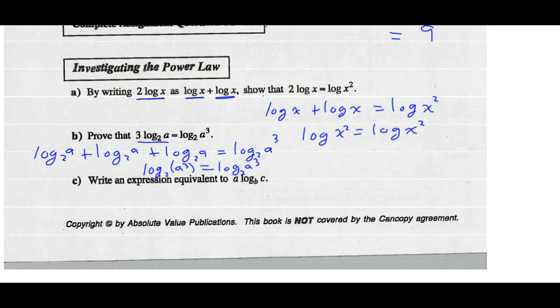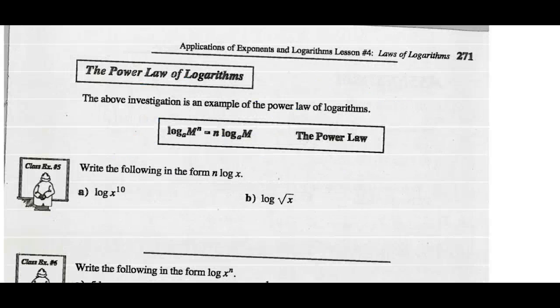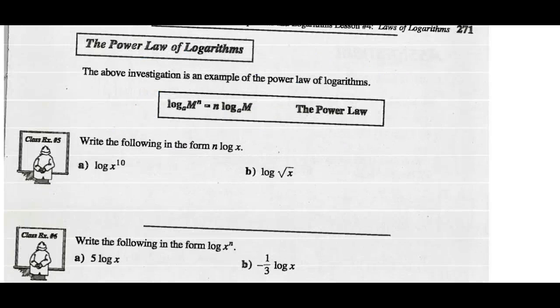So write an equivalent expression: A times log C base B is the same as saying the log of C to the exponent A base B. That is our power law. So the log of M to the exponent N base A can be written as N times the log of M base A.